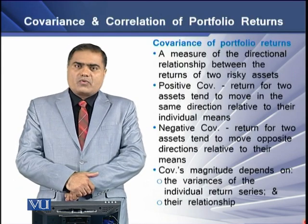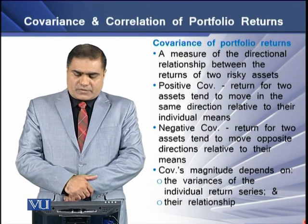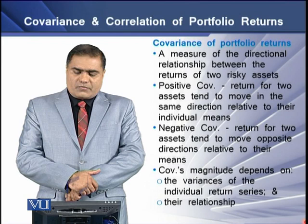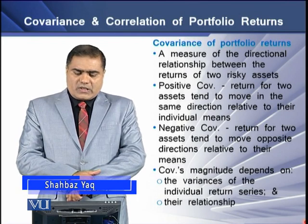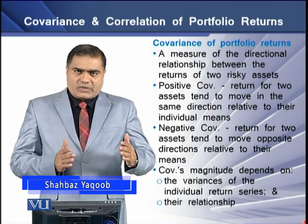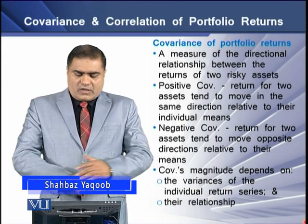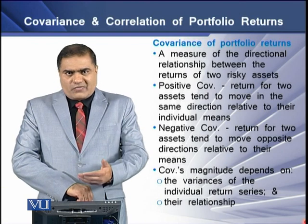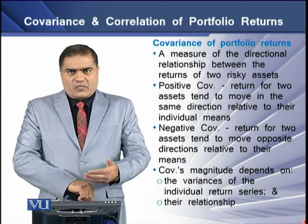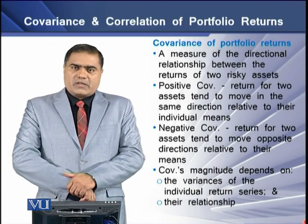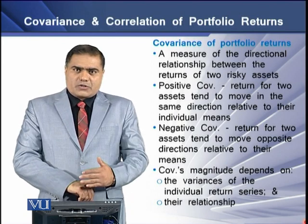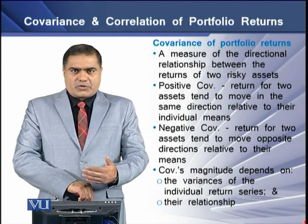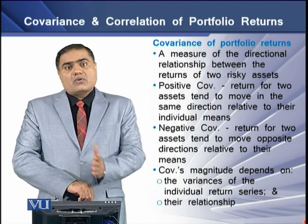First we have covariance of portfolio returns. Covariance is a measure of directional relationship between the returns of two risky assets. We have positive covariance and negative covariance. By positive covariance we mean the returns for two individual assets tend to move in a similar direction relative to their individual means over time.